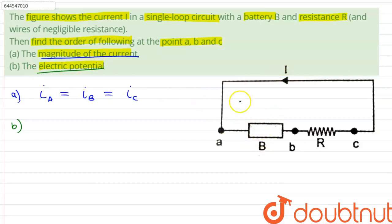As you can see that current is going into this part of the battery. Therefore this is the negative terminal and this is the positive terminal.